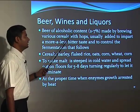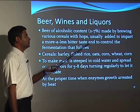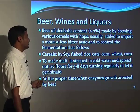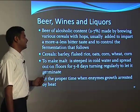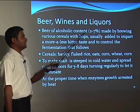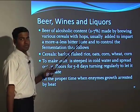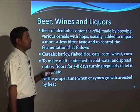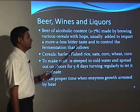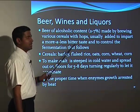Beer has an alcoholic content of 2 to 7 percent and is made by brewing various cereals with hops, which are usually added to impart a more or less bitter taste and to control the fermentation that follows. The quality of beer depends on the alcohol content, the raw material used, and the taste. To impart taste, additional components are added which are not part of the fermentation itself.